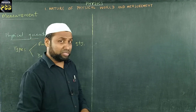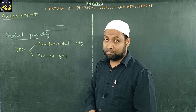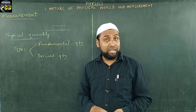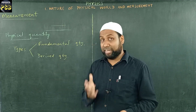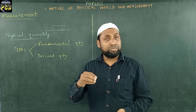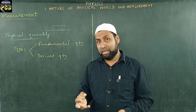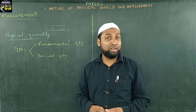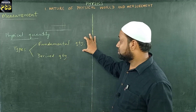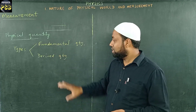Quantities that cannot be expressed in terms of other quantities are known as fundamental quantities. Examples include length, mass, time, temperature, amount of substance, luminous intensity, and electric current. We cannot measure length in kilograms; similarly, we cannot measure mass in meters. Such quantities which cannot be expressed in terms of other quantities are called fundamental quantities.